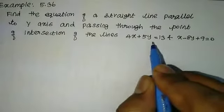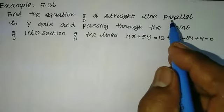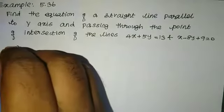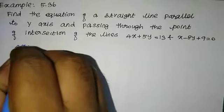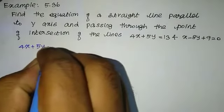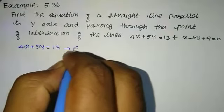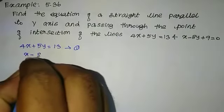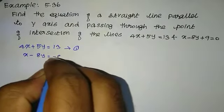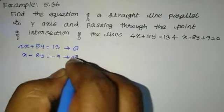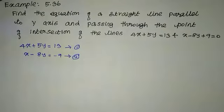We need to find the equation of a straight line parallel to y-axis passing through the intersection point. So, first equation: 4x plus 5y equal to 13. Second equation: x minus 8y equal to minus 9.